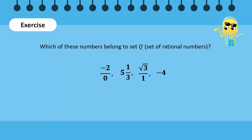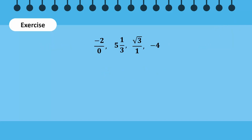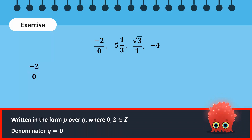Let us do a quick exercise. Which of these numbers belong to set Q? Take a minute and discuss with your friends. Let's look at the answers together. -2/0 is written in the form P/Q, and 0 and 2 are both integers. However, the denominator Q is 0. Therefore, -2/0 does not belong to set Q.